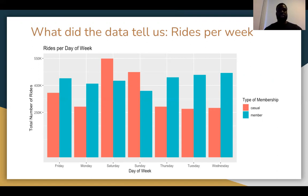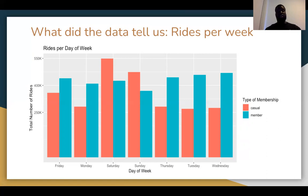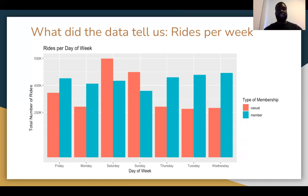Looking at rides over the week, we have two groups — casual and annual members. The graph shows that Monday to Friday, annual members use the service at a very uniform rate with no significant variation in the number of rides across the week. Whereas for casuals, there are dips during the week — mainly Monday through Wednesday — an increase on Friday, but Saturday and Sunday show the biggest peak, indicating that casual riders tend to use the service much more during the weekend.